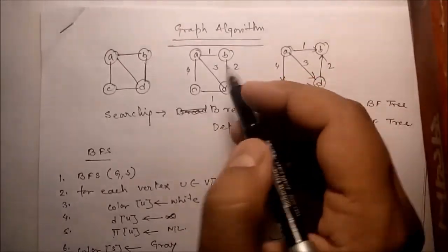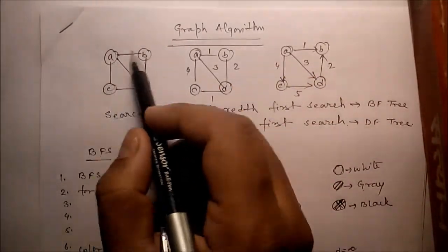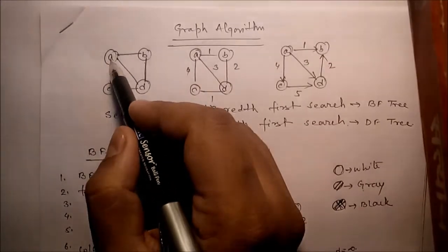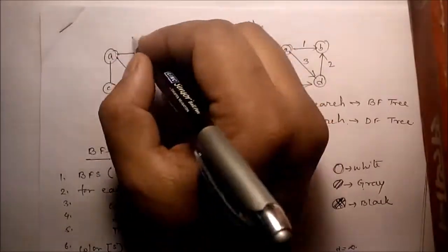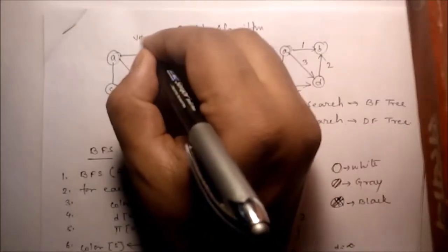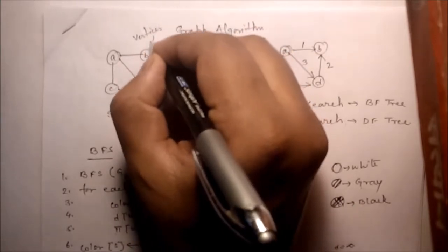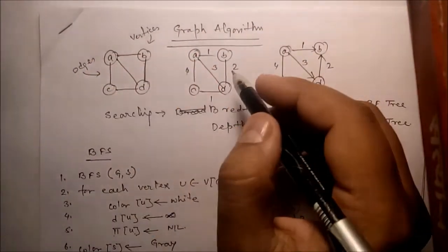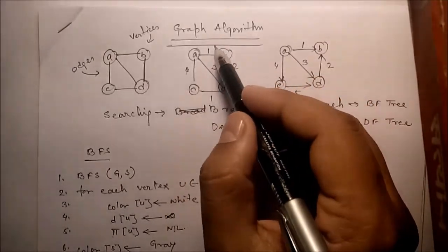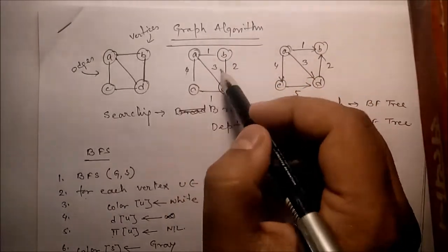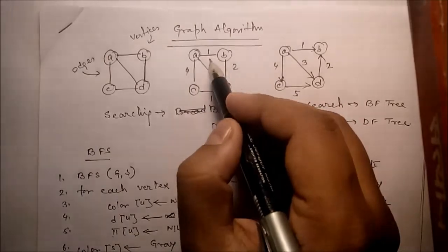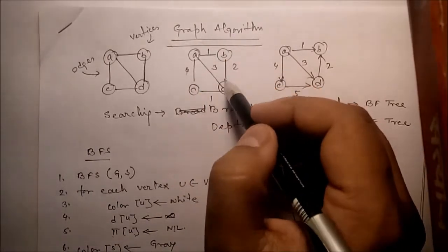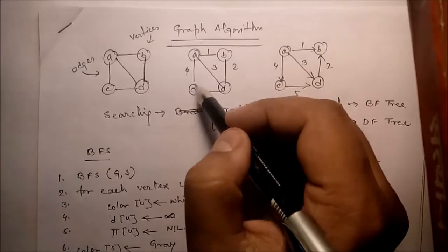A graph is a collection of vertices and edges. A, B, C, D are the vertices. A-B, B-D, A-D, A-C are called the edges. The numbers 1, 2, 1, 3, 4 are called the weights. A to B has weight 1, B to D is 2, C to D is 1, A to C is 4.